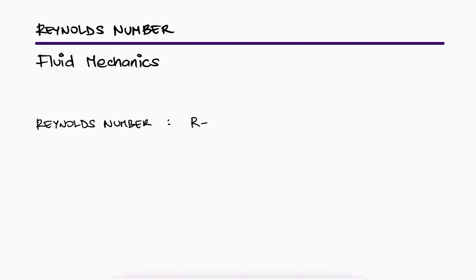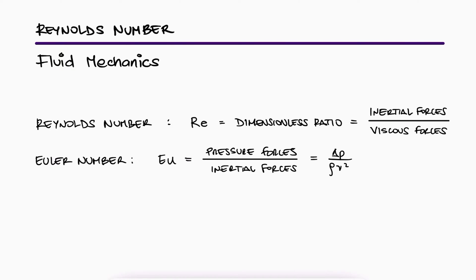Reynolds number is a dimensionless quantity that compares the inertial forces to the viscous forces within a fluid flow. It is one of many dimensionless numbers used in thermofluids courses, like Euler number in fluid mechanics for calculations where pressure gradients exist, or the Prandtl number in heat transfer.